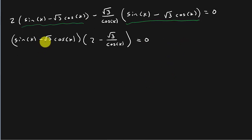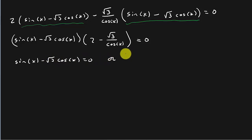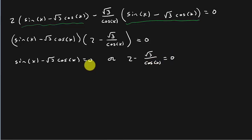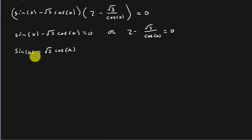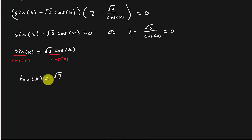So I've got this thing factored. Now I want to set each term equal to 0. So I've got sine x minus square root of 3 cosine x equals 0. Or, 2 minus square root of 3 over cosine x equals 0. For the first one, I've got sine x equals square root of 3 cosine x. And now I'm going to divide everything by cosine x, and that's going to give me tangent x equals square root of 3.